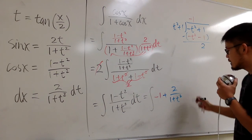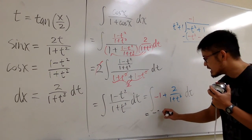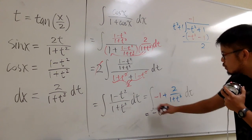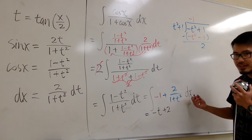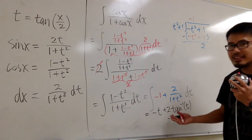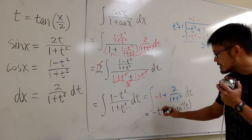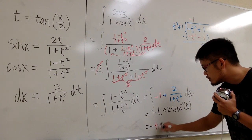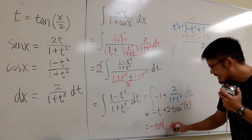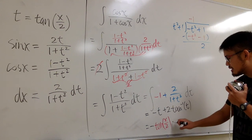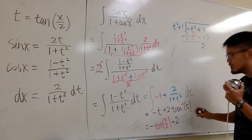So this is what we need, and we have dt. We are ready to integrate. Integrating −1 in the t-world gives us −t. Then for the 2/(1 + t²) term, we can look at this as 2 times the integral of 1/(1 + t²), which in the t-world gives inverse tangent of t. And then we're done with the integration part.